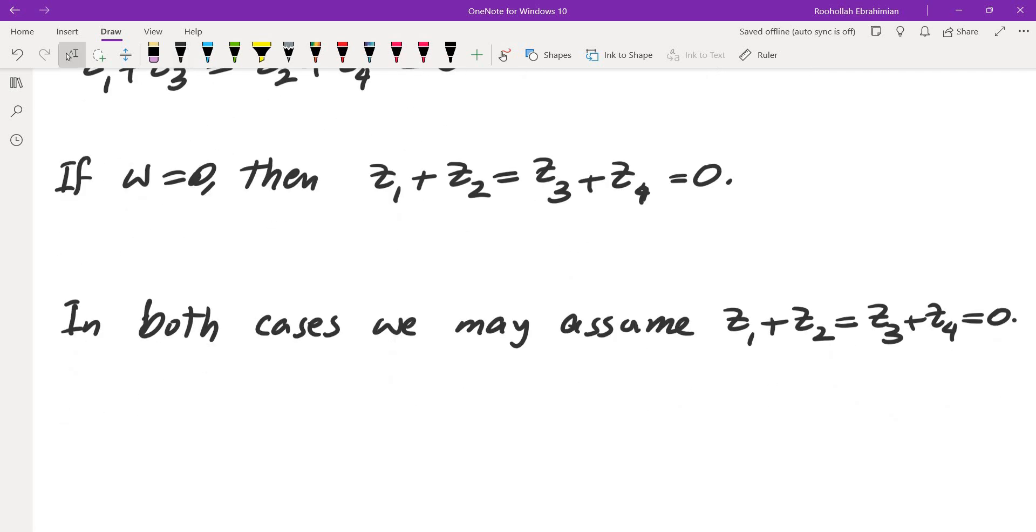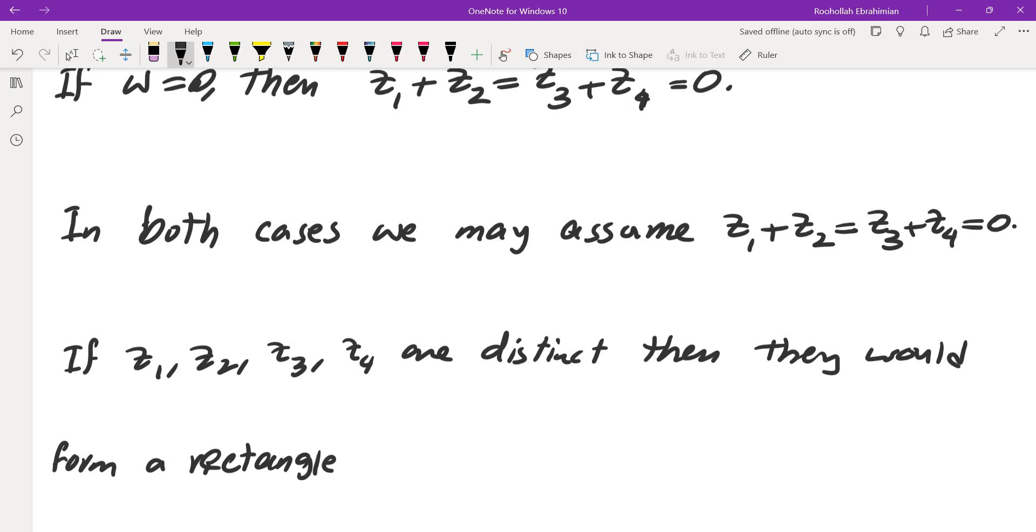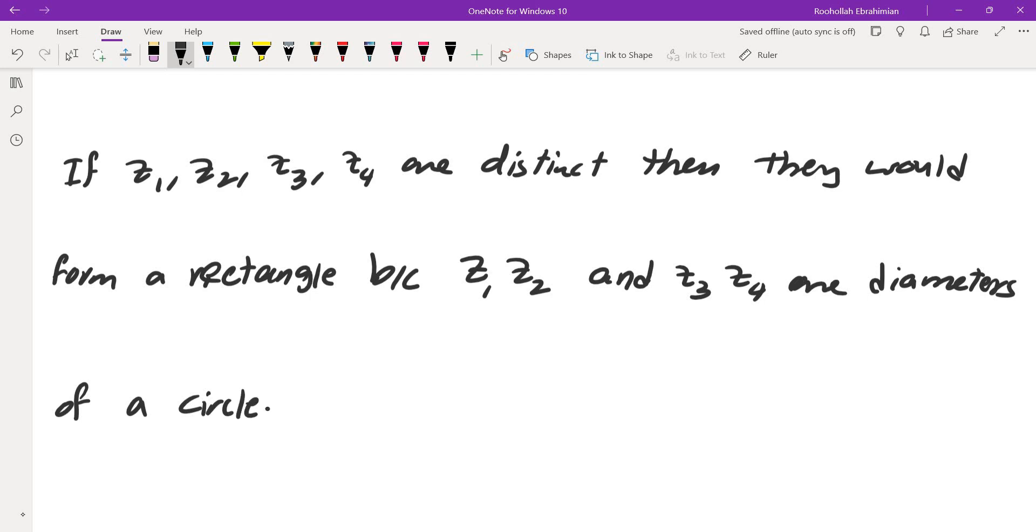Okay, so now these four would be vertices of a rectangle if they are distinct. If z1, z2, z3, z4 are distinct, then they would form a rectangle because z1 z2 and z3 z4 are diameters of a circle. So if you look at this circle, the center, z1, z2, and z3, z4, these angles are right angles.